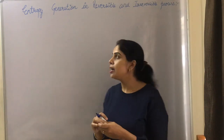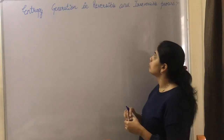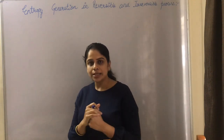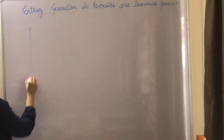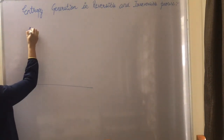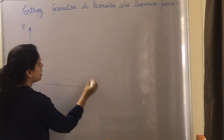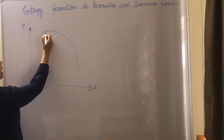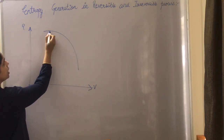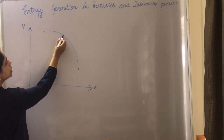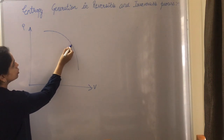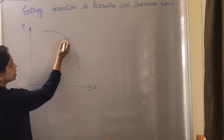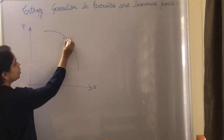Welcome back. Now let's discuss entropy generation in reversible and irreversible processes. To understand this, let's draw the PV diagram. This is your reversible process, and we know that every intermediate state in a reversible process is in equilibrium. Let's take state one and state two as intermediate states.